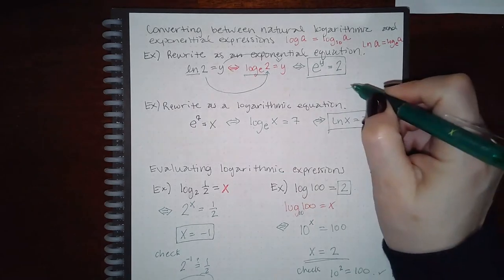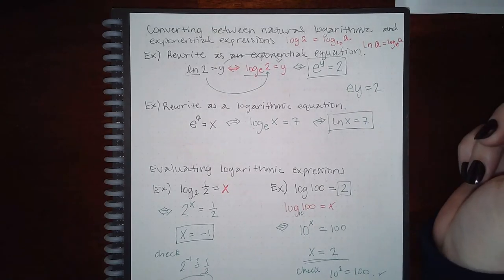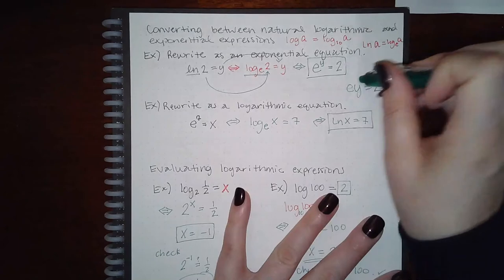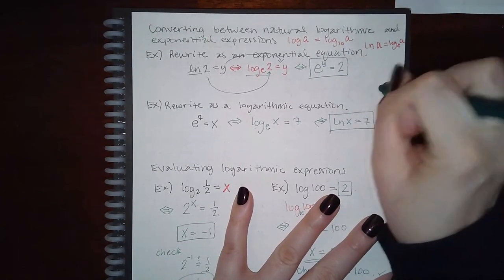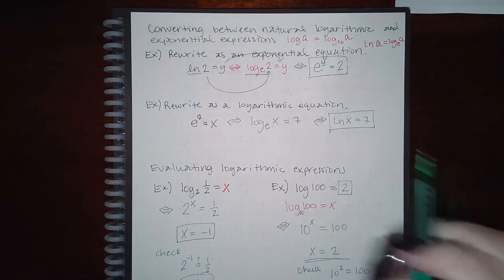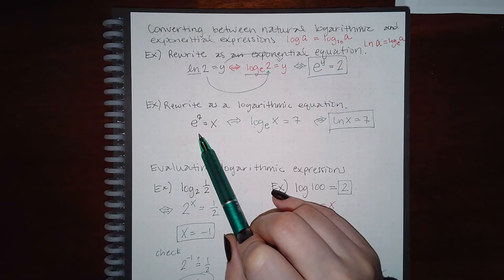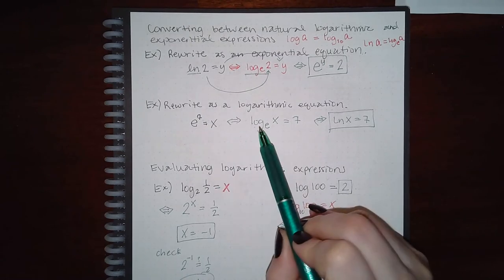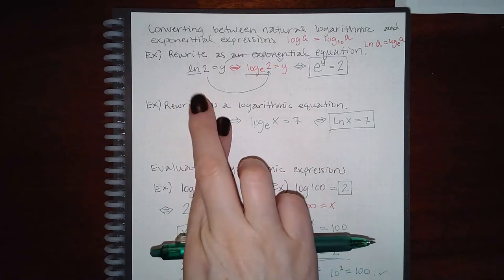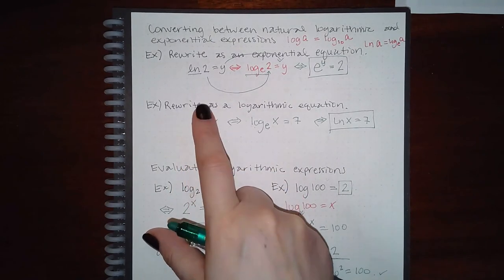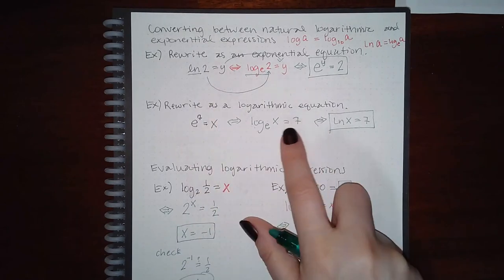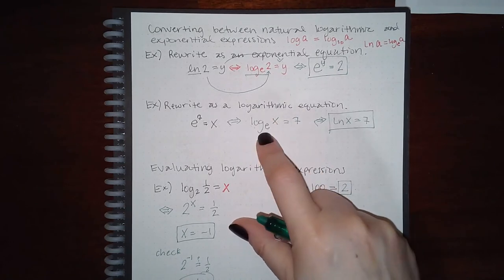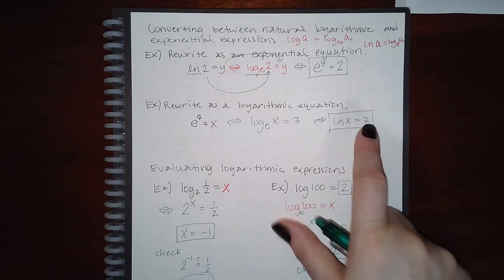Be careful not to write 'e times y equals 2' — that's multiplication, not an exponential expression. Make sure when you swap their sides that y is placed as an exponent. Now this problem says rewrite as a logarithmic expression. Given e to the x equals 7: the base is e, so I know it will be log base e. The x goes to the same side as e as an exponent, and the 7 comes to the other side. This can be written as the natural log of x equals 7.